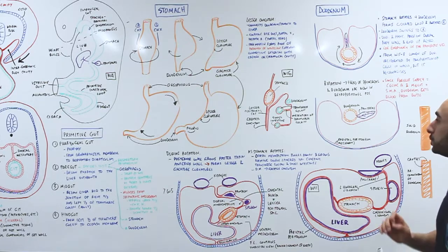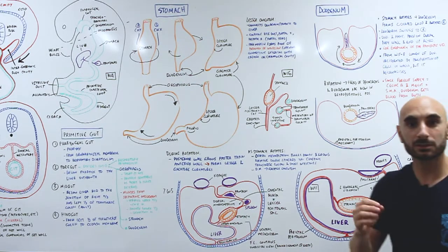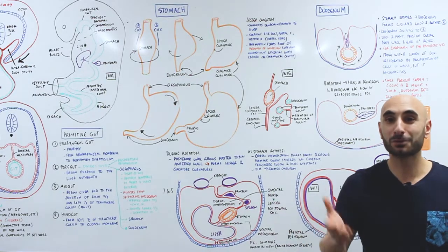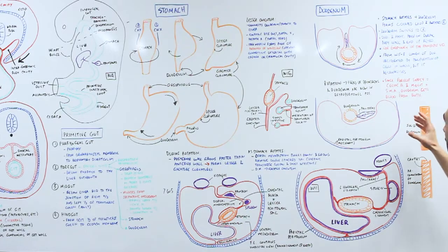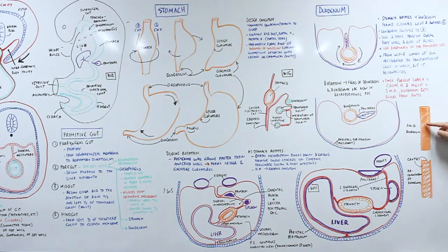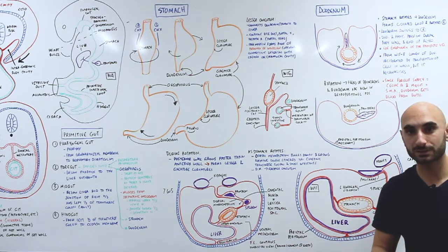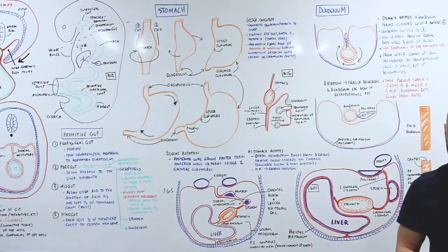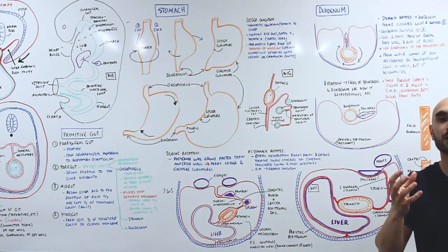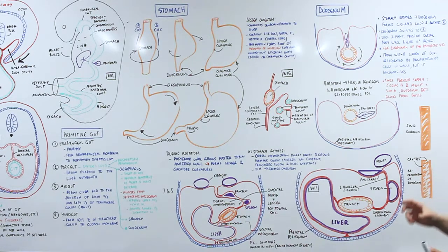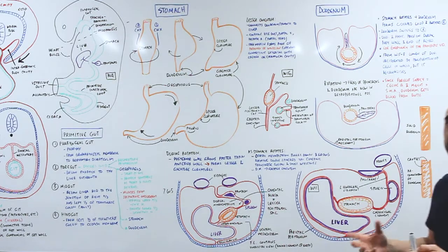That's just the proximal part of the duodenum and the head of the pancreas. From week five to week eight, the duodenum will actually become solid — it'll be filled with proliferated cells from the wall — but eventually by week eight it will recanalize, meaning these cells will be degenerated and it'll form a patent lumen. Regarding blood supply: the foregut is supplied by the celiac artery and the midgut by the superior mesenteric artery. Since the duodenum is made up of both foregut and midgut, it gets its blood supply from both.